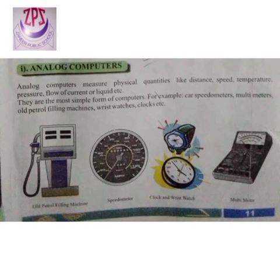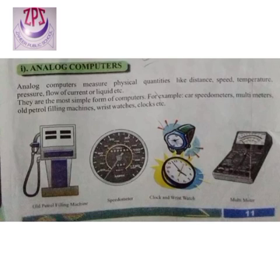Analog computers measure physical quantities such as distance, speed, temperature, pressure, flow of current or liquid, etc. They are the most simple form of computers. Examples of analog computers include car speedometers, millimeters, multi-meters, old petrol filling machines, wrist watches, and clocks.